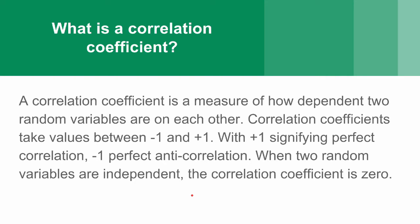What is a correlation coefficient? A correlation coefficient is a measure of how dependent two random variables are on each other. So, when one changes, how the other changes in response.